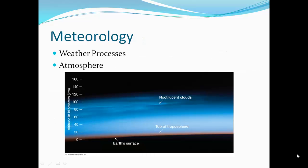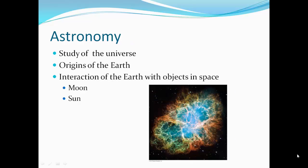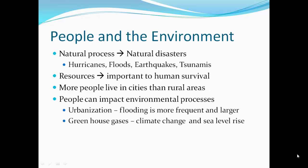Meteorology looks at weather processes and the atmosphere. Astronomy is the study of the universe, origins of the Earth, and interaction of the Earth with objects in space, such as the Moon and Sun.